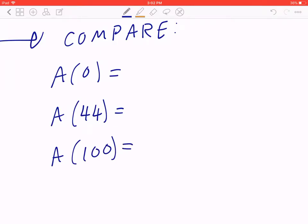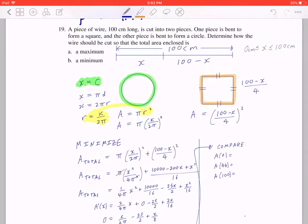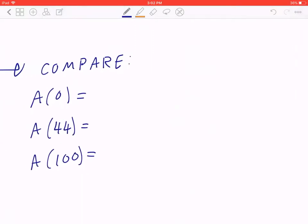So again, if you go back, what this means is if x is going to be 100, that means the entire wire is going to be bent into a square. And 100 divided by 4 is going to be 25. 25 times 25 will give you 625 centimeters squared.